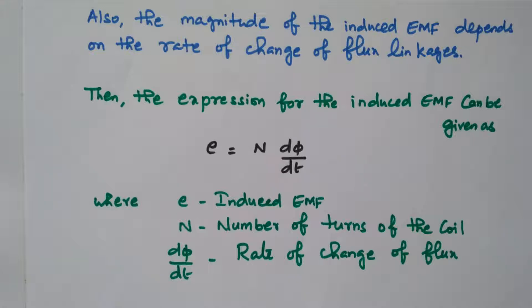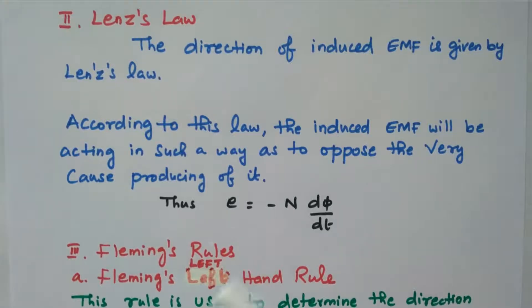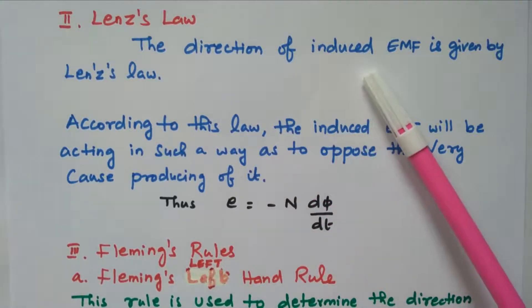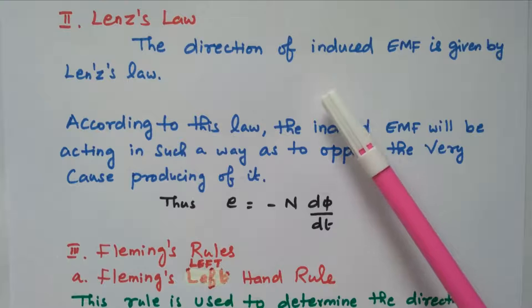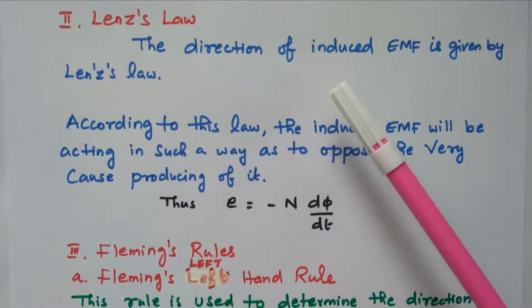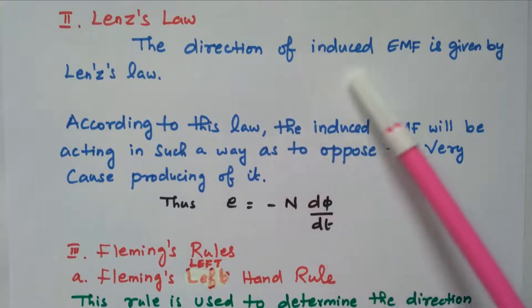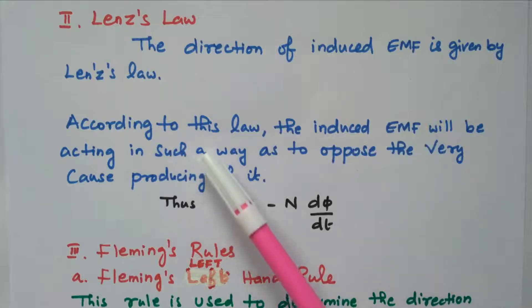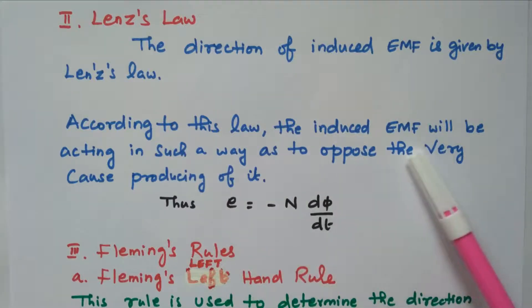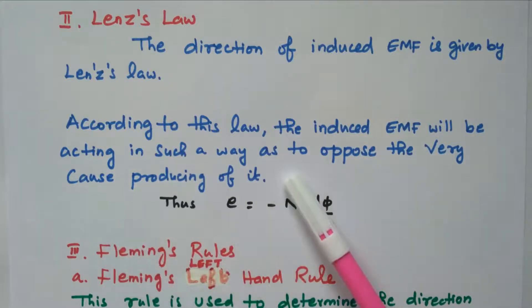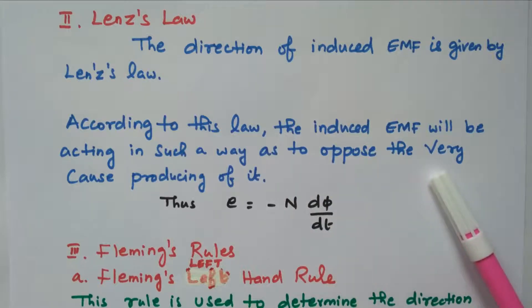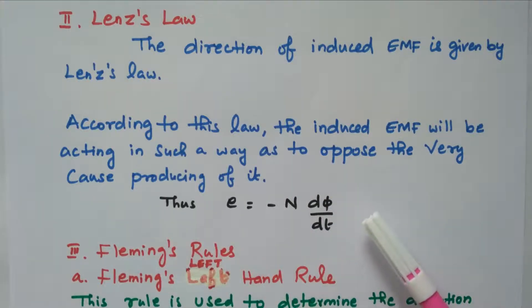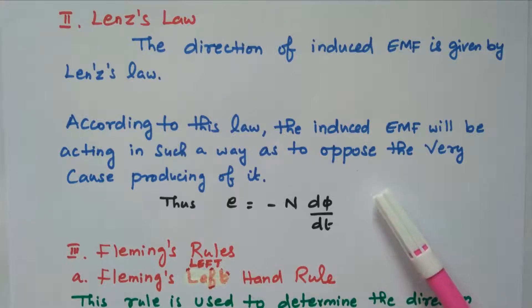Now we will go to Lenz's law. The direction of induced EMF is given by Lenz's law. Faraday's law gives the expression N dφ/dt, while the direction is given by Lenz's law. According to this law, the induced EMF will act in such a way as to oppose the very cause producing it.